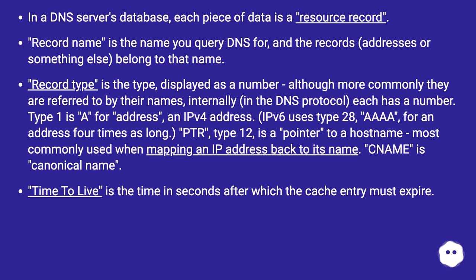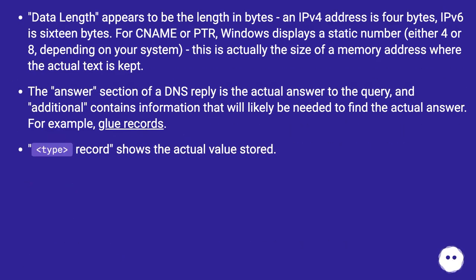CNAME is canonical name. Time to live is the time in seconds after which the cache entry must expire. Data length appears to be the length in bytes. An IPv4 address is 4 bytes; IPv6 is 16 bytes. For a name or PTR, Windows displays a static number — either 4 or 8 — depending on your system.